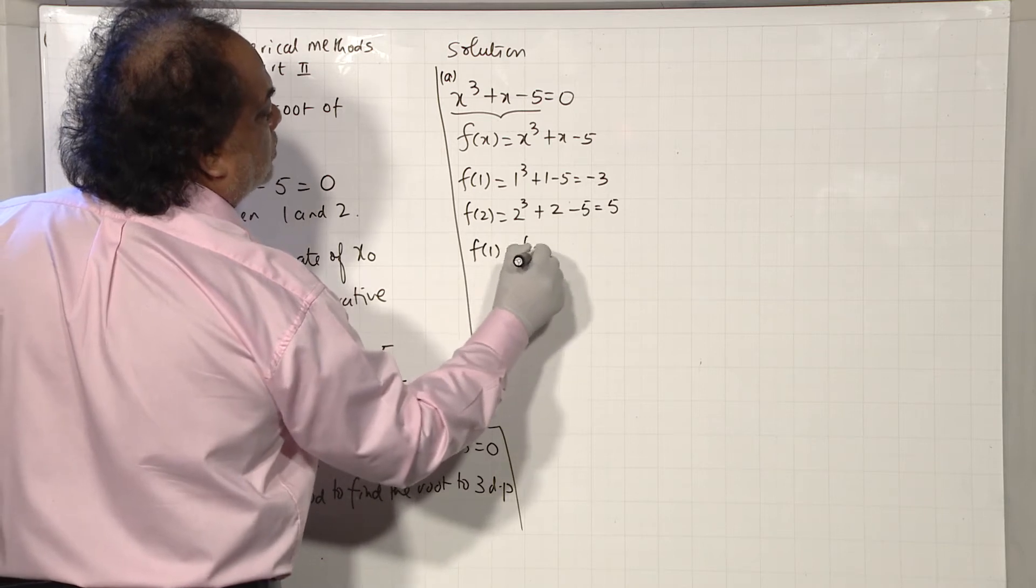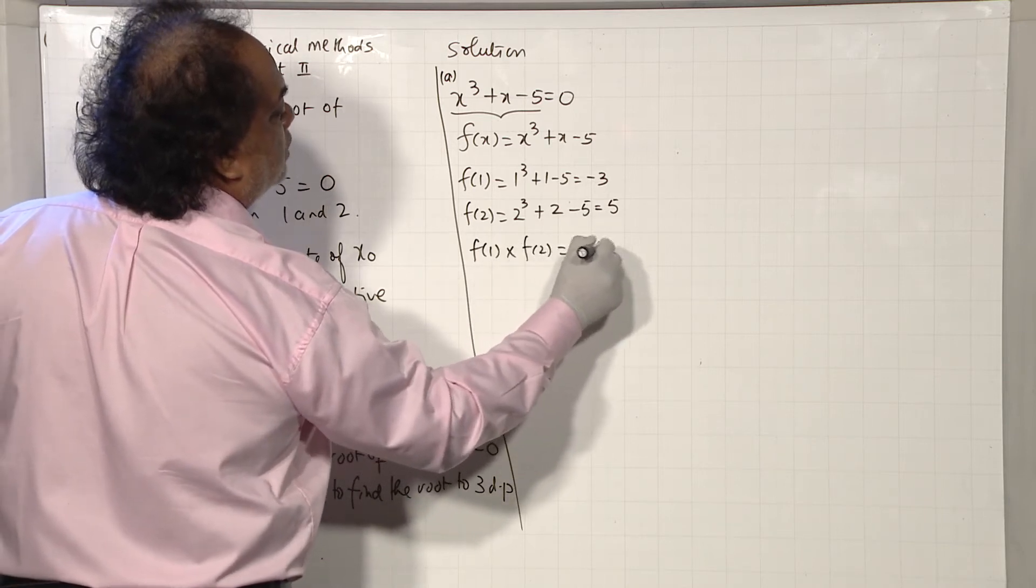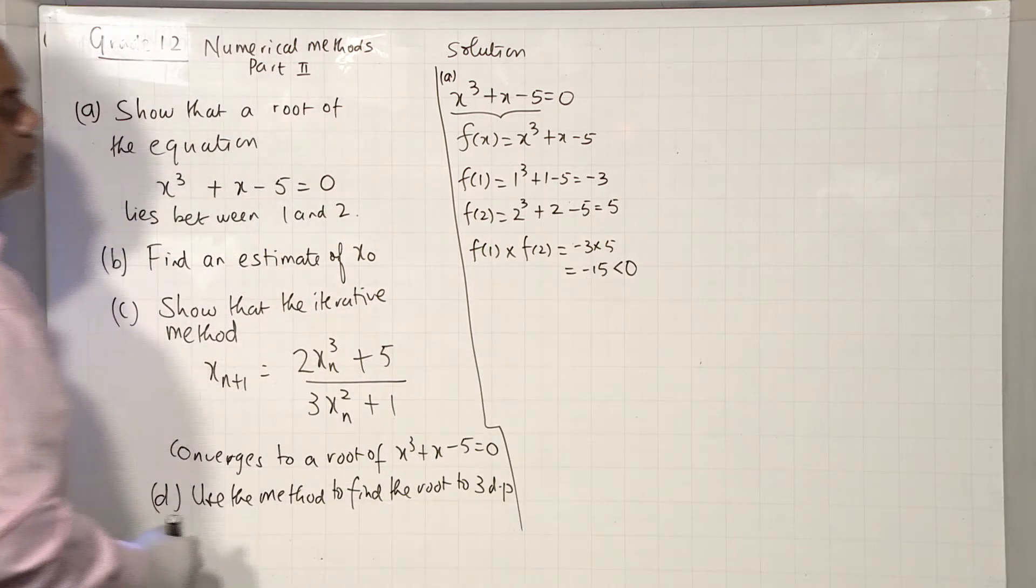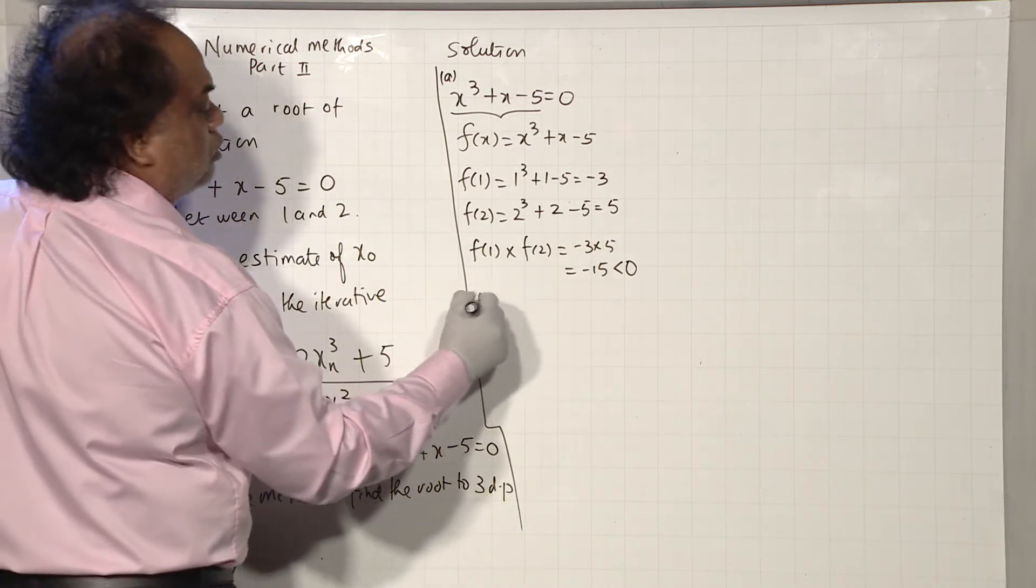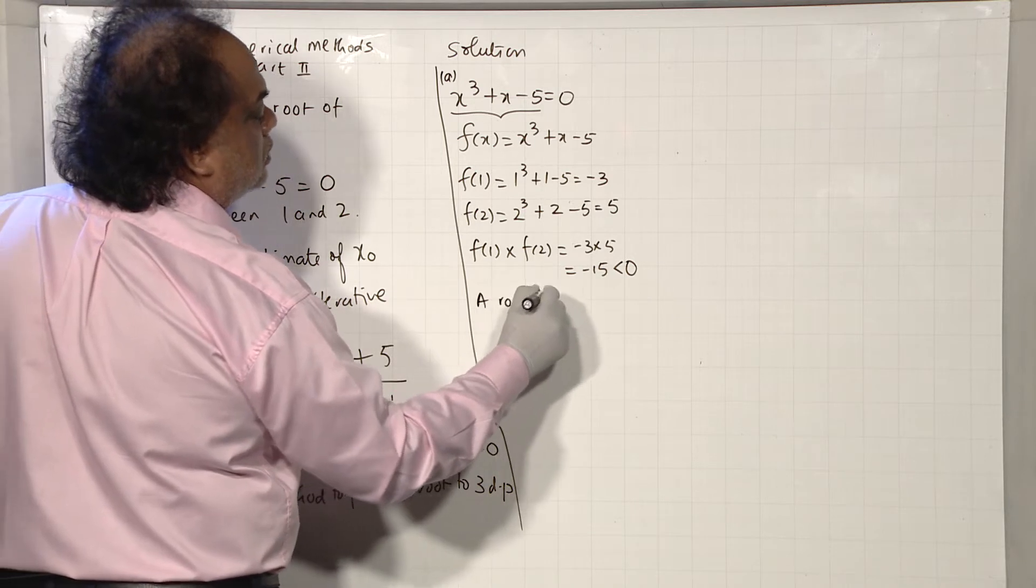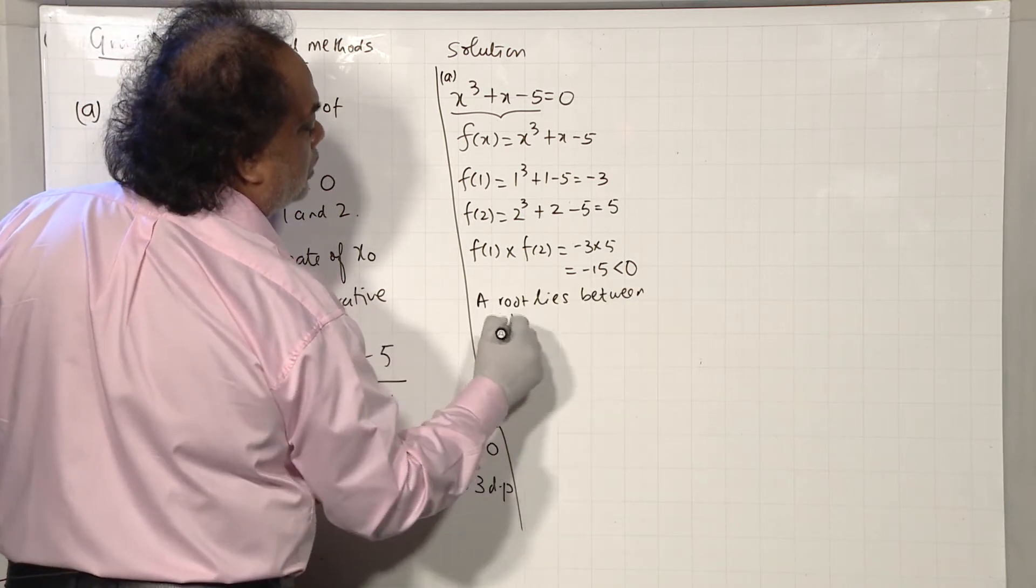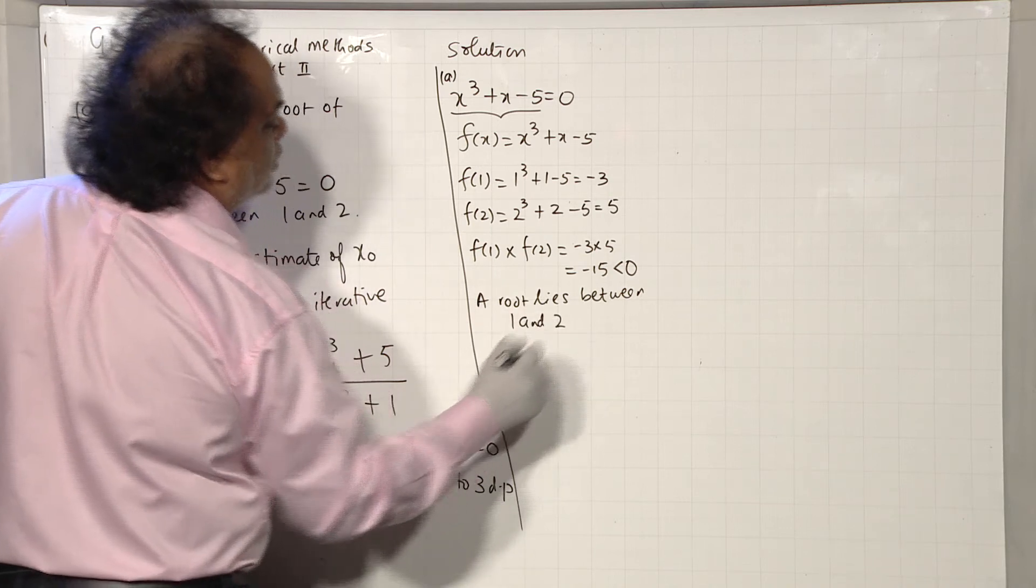So f(1) times f(2) is minus 15, which is less than 0. So a root lies between 1 and 2.